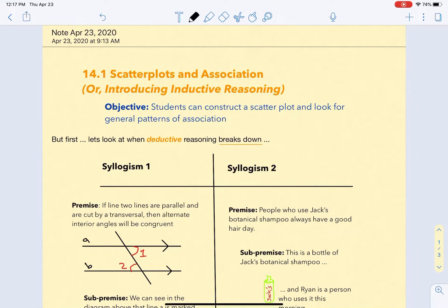Hello, Math 8 students. Today we have an important transition, not just between geometry and statistics, but between deductive reasoning and inductive reasoning. My objective is for you to construct a scatterplot, which is easy, and look for general patterns of association, which is also relatively easy.